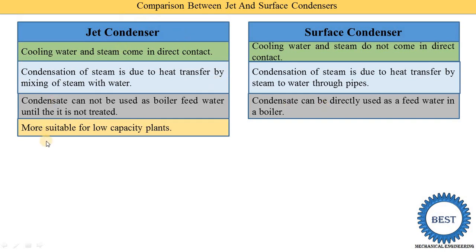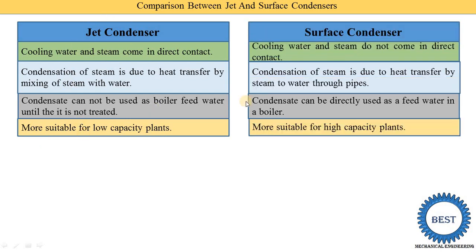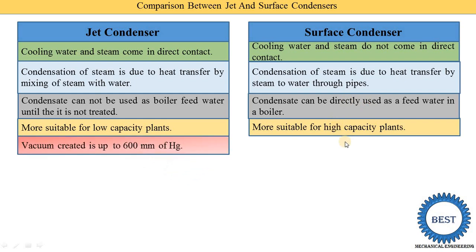Fourth point: a jet condenser is more suitable for low capacity plants, while a surface condenser is more suitable for high capacity plants. In a jet condenser, the vacuum created is up to 600 mm of Hg.